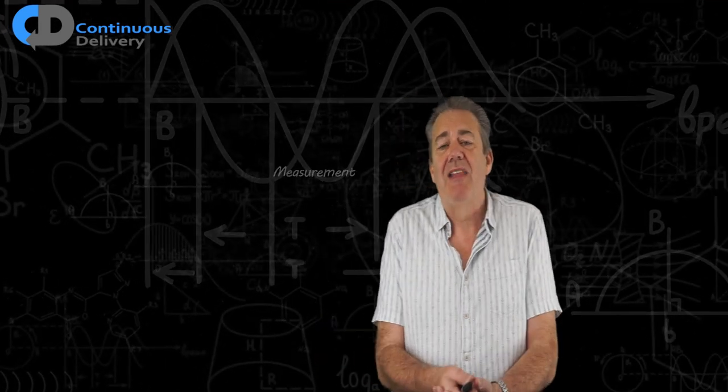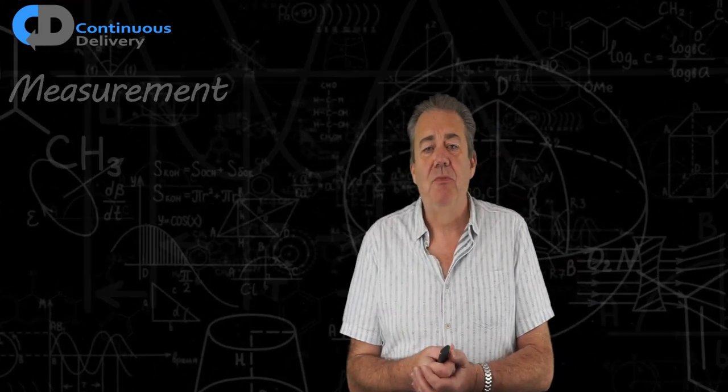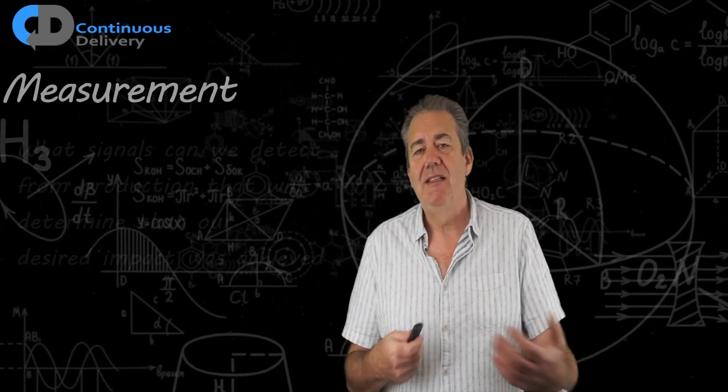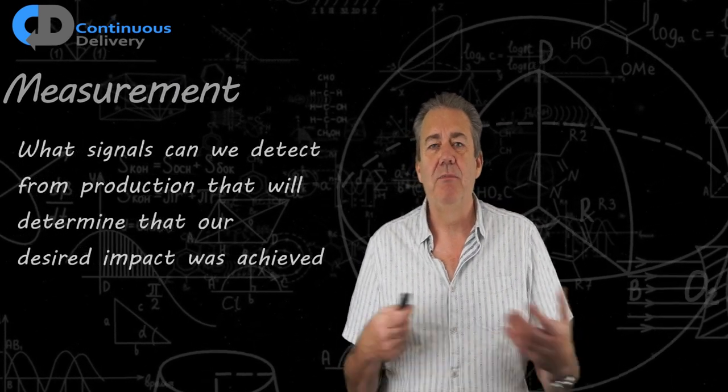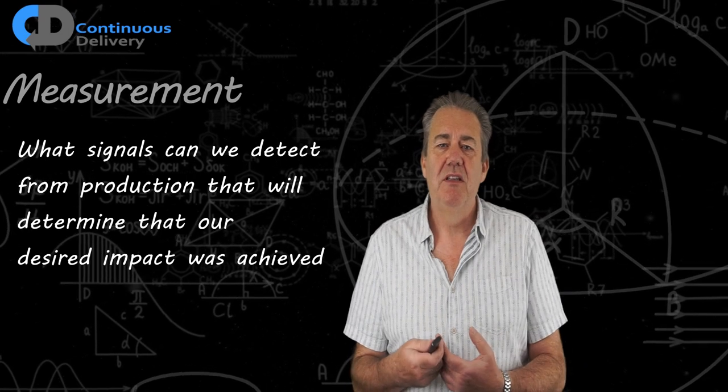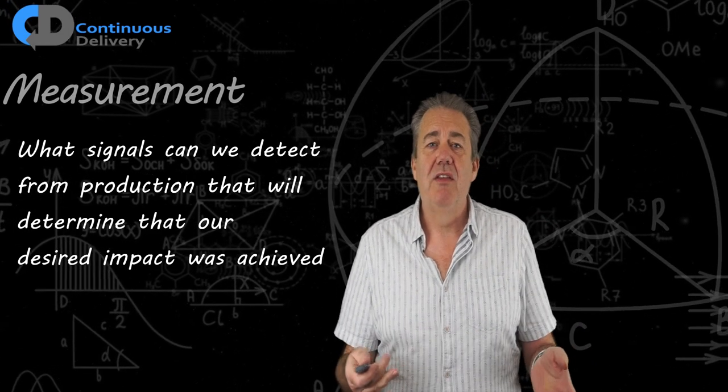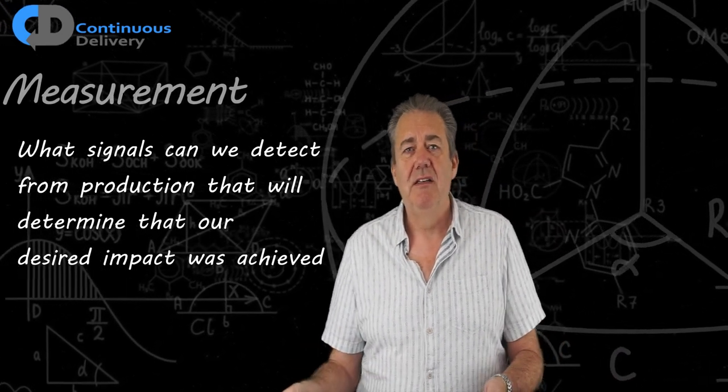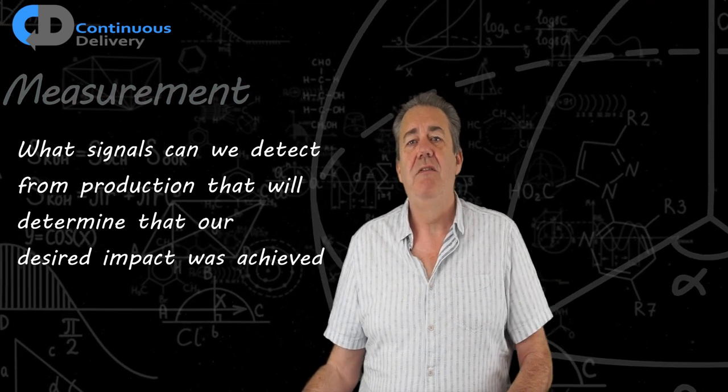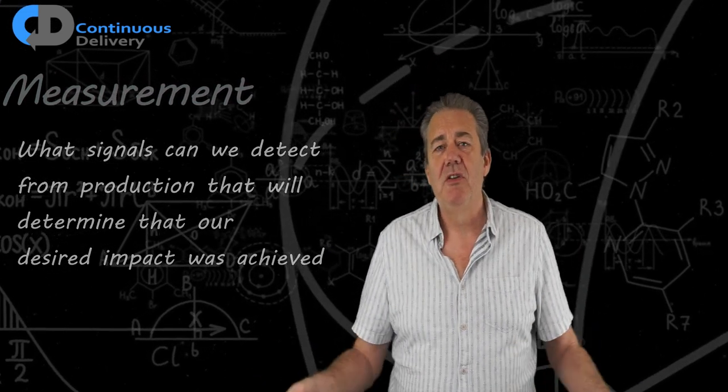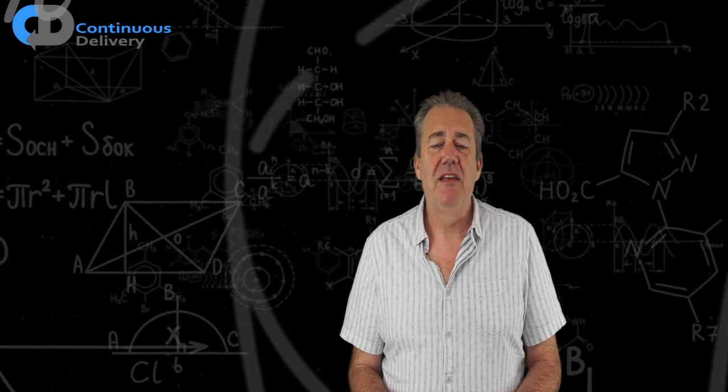Once we understand that impact, we can start thinking about measurement. What's the signal that we can detect from our systems in production that would be able to determine whether the impact that we desired is being achieved? And what sorts of measurements can we use to understand that?